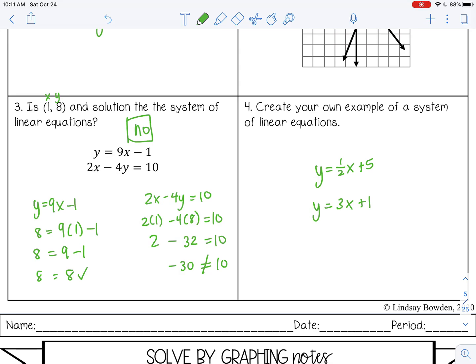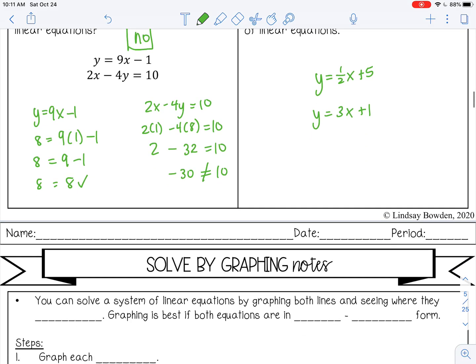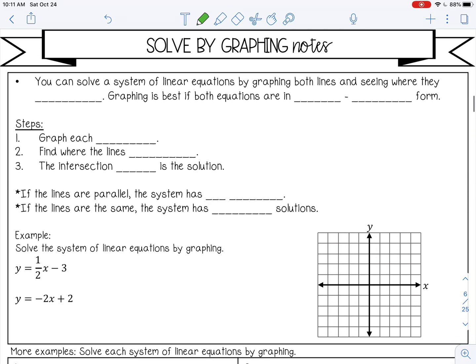Let's move on to solving by graphing. You can solve a system of linear equations by graphing both lines and seeing where they intersect. Graphing is best if both equations are in slope-intercept form. The reason for that is it's easy to graph in slope-intercept form: you have the y-intercept, you have the slope, you can quickly graph those lines and see where they meet. Here are the steps: